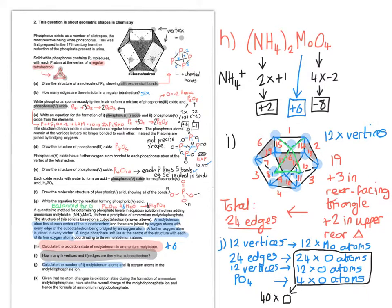So if we take 24, 12, and 4, that gives us 40 oxygen atoms. So then finally, it says, given that no atom changes its oxidation state during the formation of ammonium molybdophosphate, calculate the overall charge of the molybdophosphate ion, and hence the formula of ammonium molybdophosphate. So what I'm going to do here is park the two answers from part J, 12 molybdenum atoms and 40 oxygen atoms next to where J is printed, and clear a bit of space in the bottom right-hand corner of the screen.